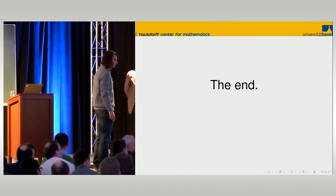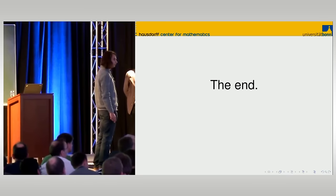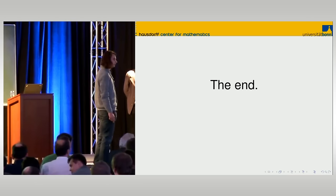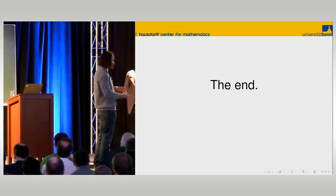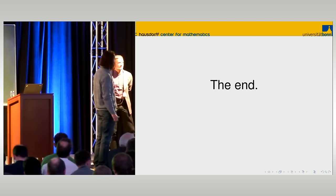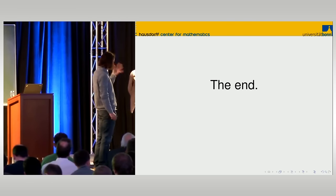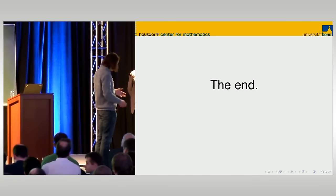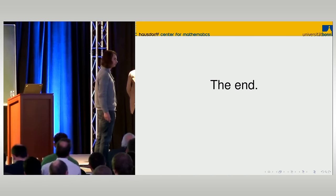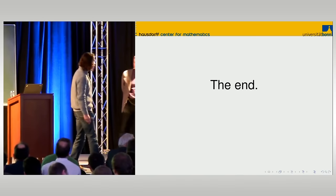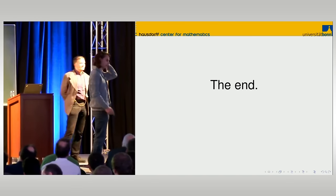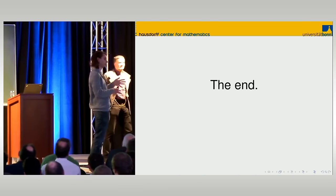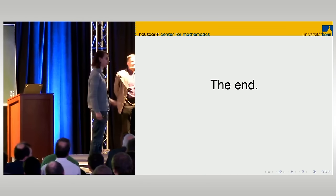You mentioned the conjecture of Bergeron-Venkatesh. Does it have some bearing on your result? No, I think those are just two different directions, though it's an interesting conjecture to have in mind in order to appreciate what it means to talk about torsion classes. The methods used to attack the Bergeron-Venkatesh conjecture are completely analytic, very different from the methods here.